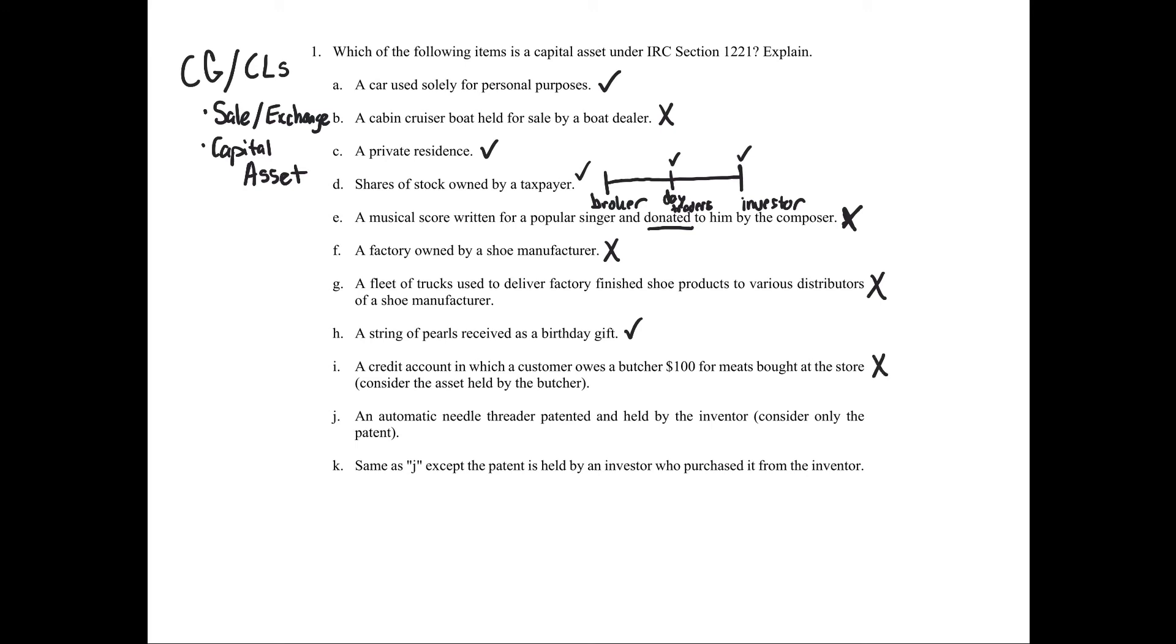J, automatic needle threader patented and held by the inventor. Now we're only considering the actual patent, not the actual device itself, the actual threader. What is that? That's a self-created patent. And therefore that is not a capital asset, right? Because it's held by the inventor, the creator. So that is not a capital asset.